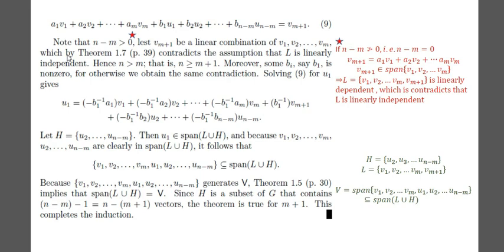We claim that n minus m is greater than 0. If it were 0, then Vm+1 would equal A1·V1 + A2·V2 + ... + Am·Vm, meaning Vm+1 is in the span of {V1, ..., Vm}, making {V1, ..., Vm+1} linearly dependent — contradicting that L is linearly independent. So n minus m must be greater than 0, meaning n is greater than or equal to m plus 1.